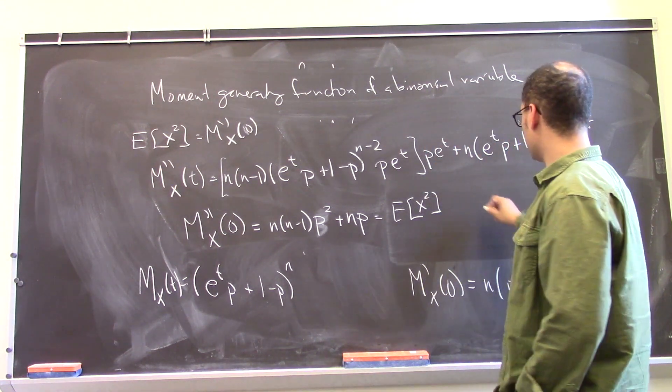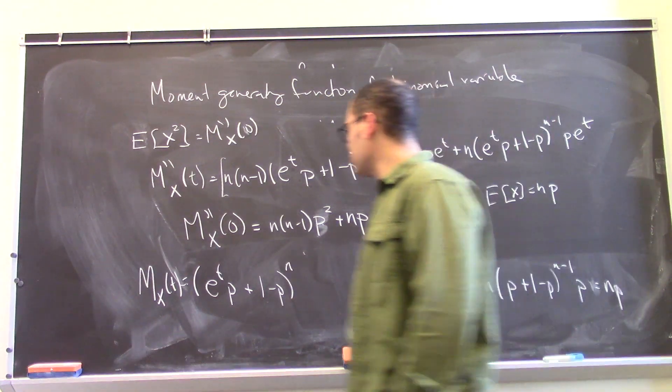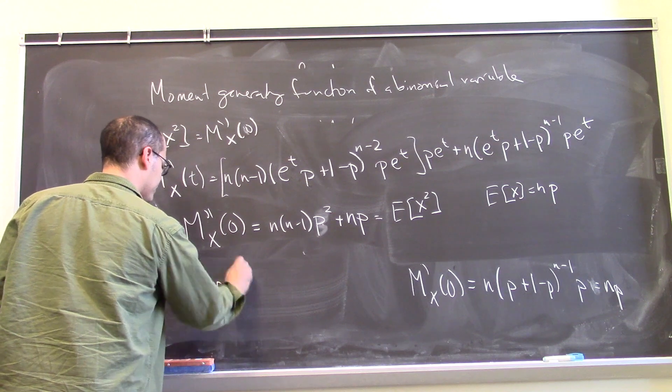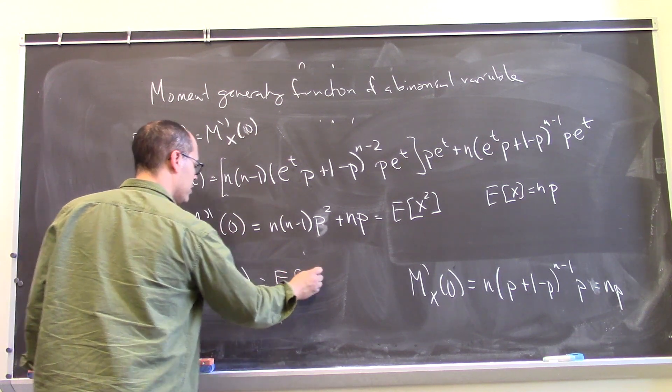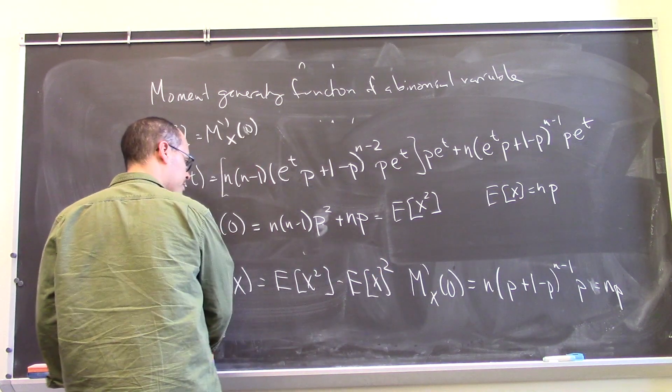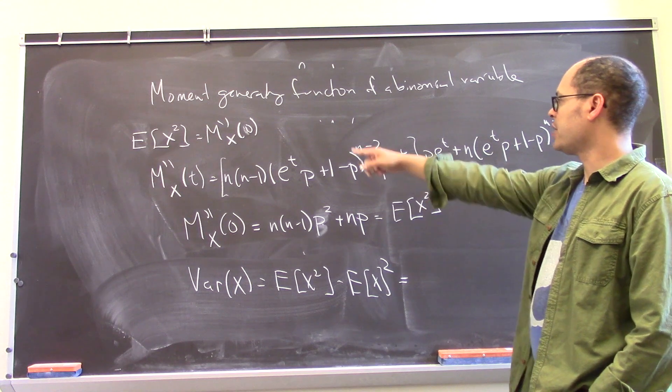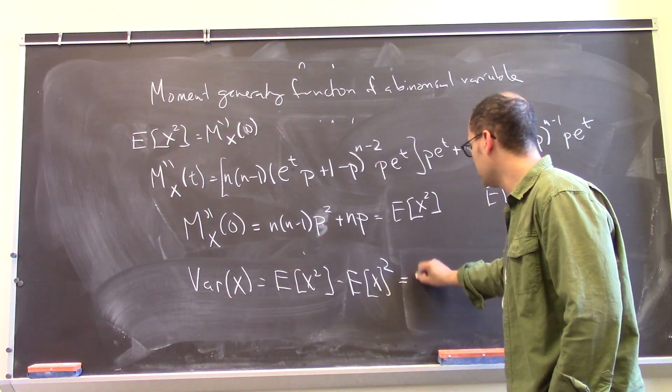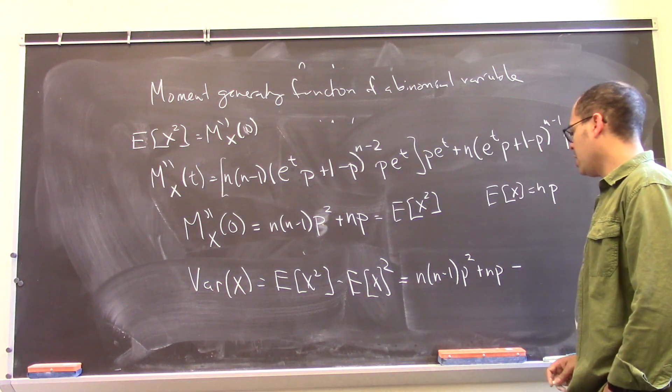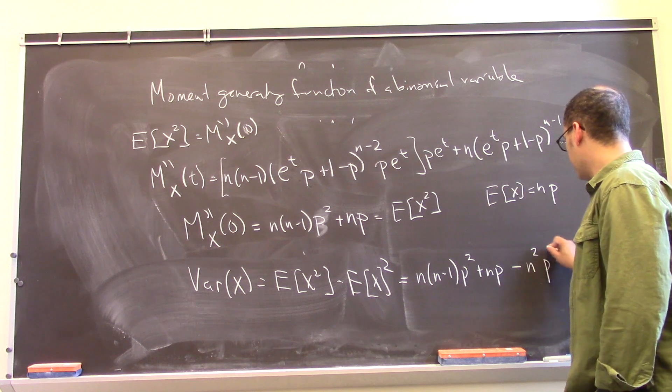A moment ago, we just showed that the expected value of X was np. And now, putting those things together, we can get the variance. So remember the variance is the expected value of the square minus the square of the expected value. And so what do we got? The expected value of the square was this: n times n minus 1 p squared plus np minus the square of the expected value, which is n squared p squared.